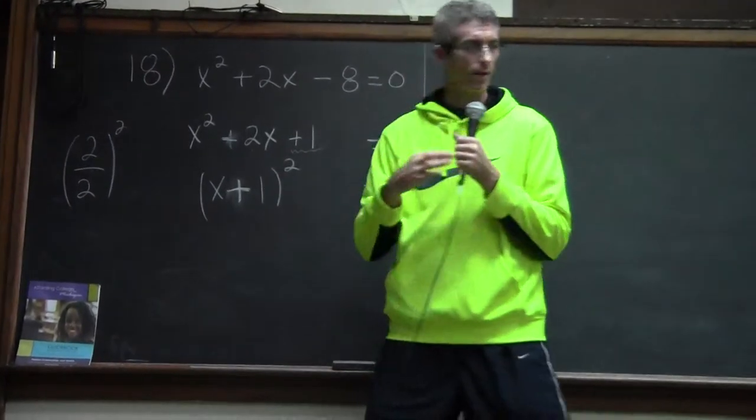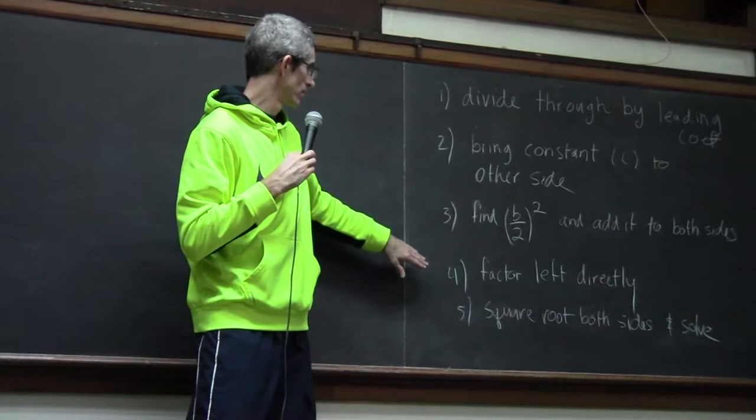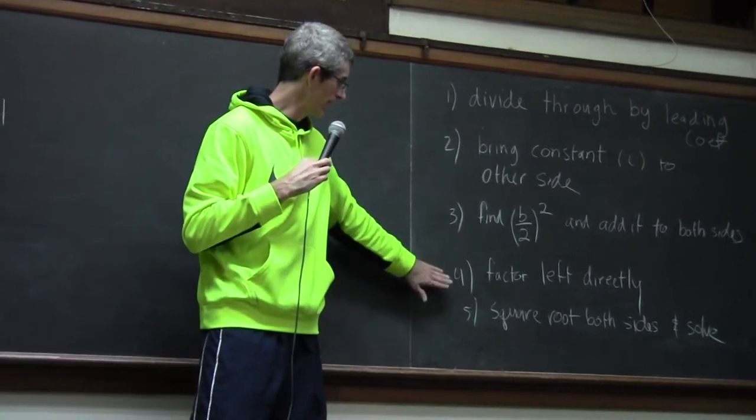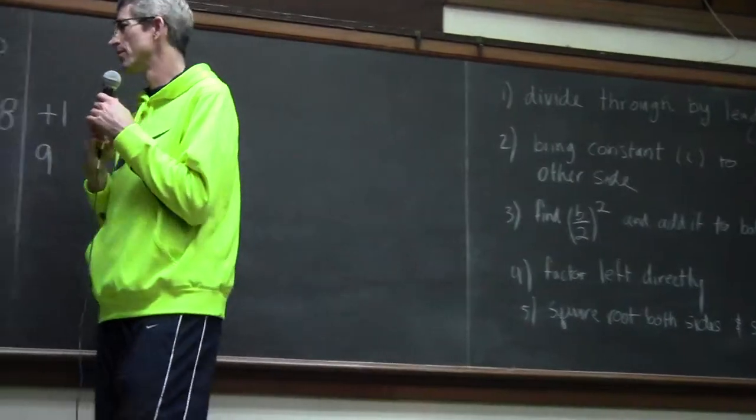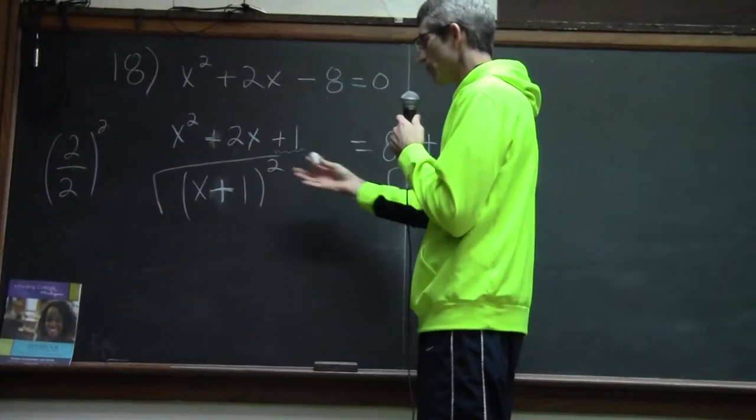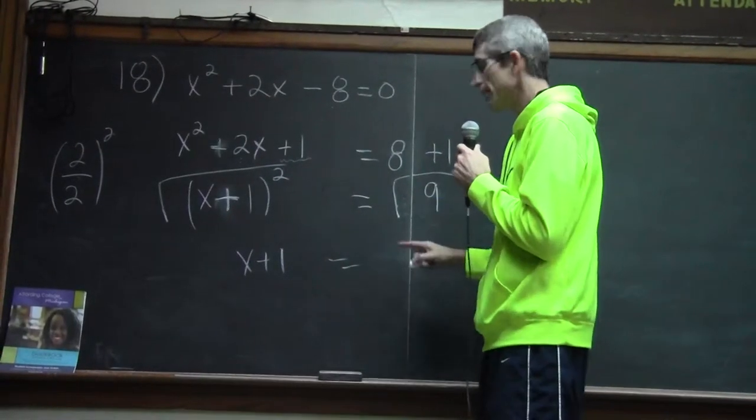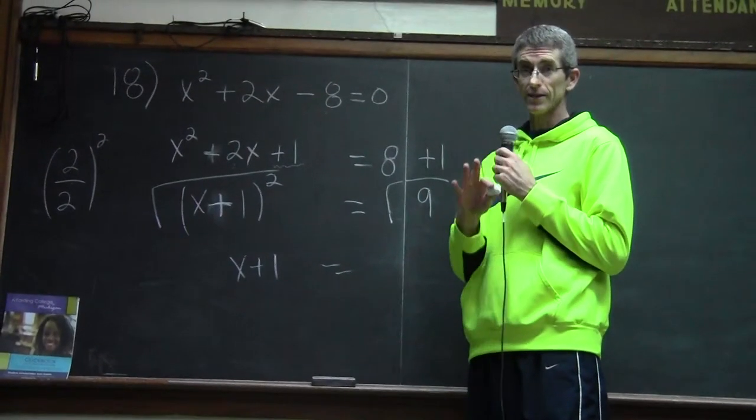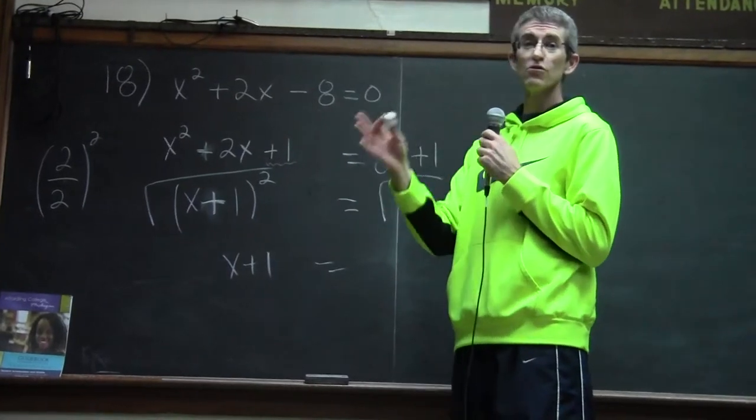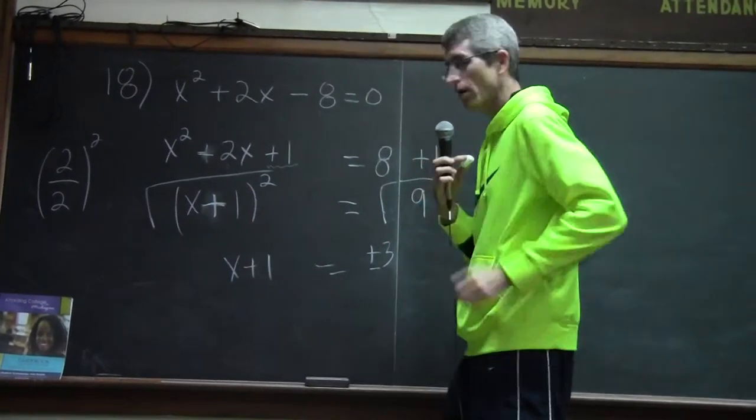Now the next step is we did the factoring. Now square root both sides. So take the square root. Take the square root. Now this problem worked out easy. x plus 1 equals what's the square root of 9? Now you've been used to writing just positive, the principal root. But now we have to do both, plus and minus.